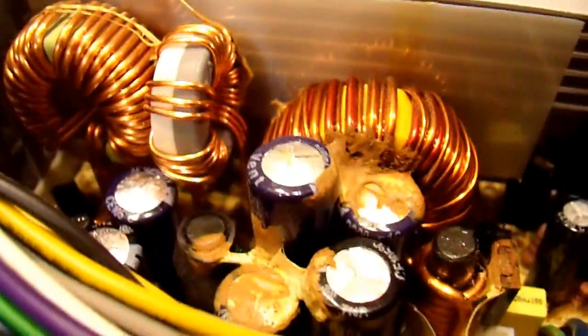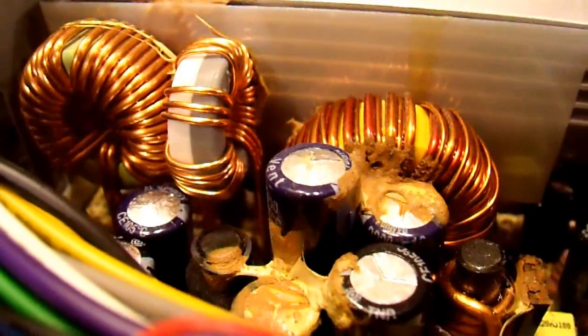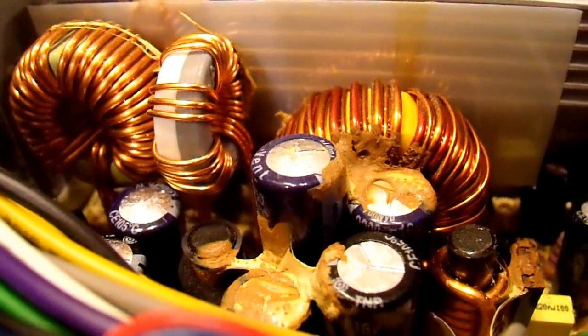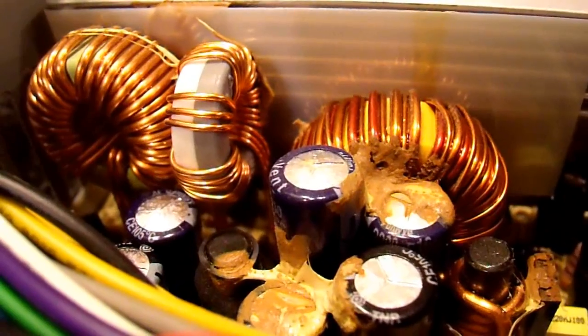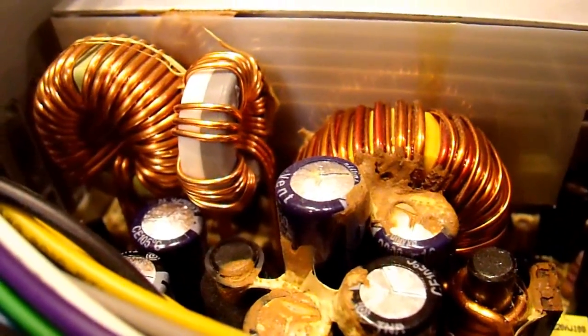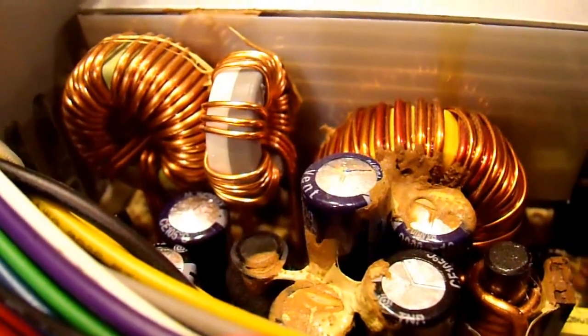They're separate voltage rails, so a lot of these caps are for those different rails. But if you look closely, and I'm not sure how well this shows up on camera, but you can see that a lot of the tops of these capacitors are bulged. The nasty goo on here is just some caulking-type material. I'm not sure what it is.